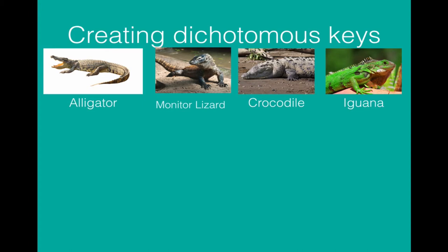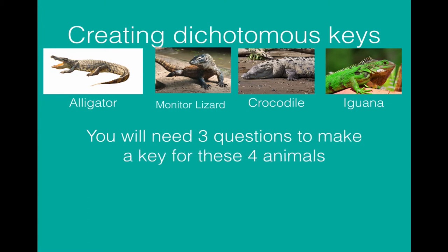Now when you are creating a dichotomous key you always need one fewer questions than you have animals. So if you have four you need three questions. If you had eight animals you needed seven questions.